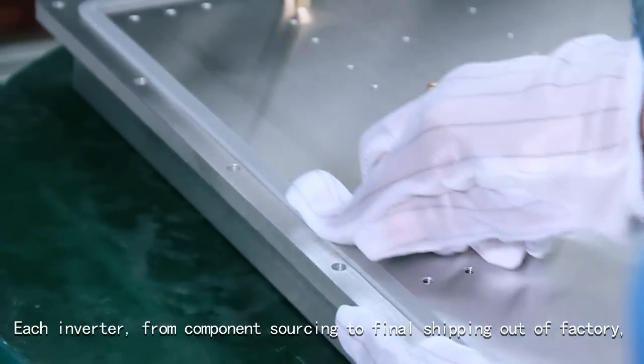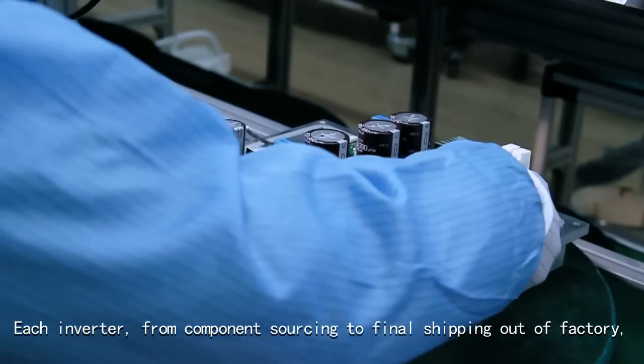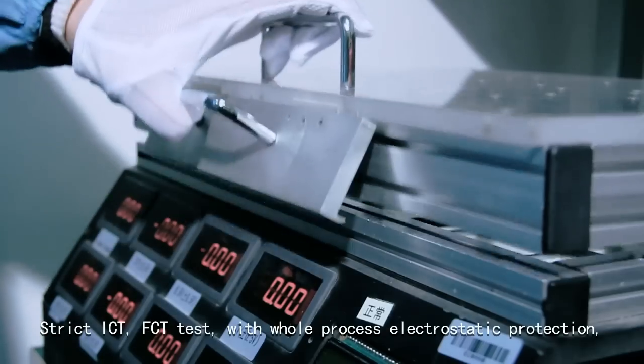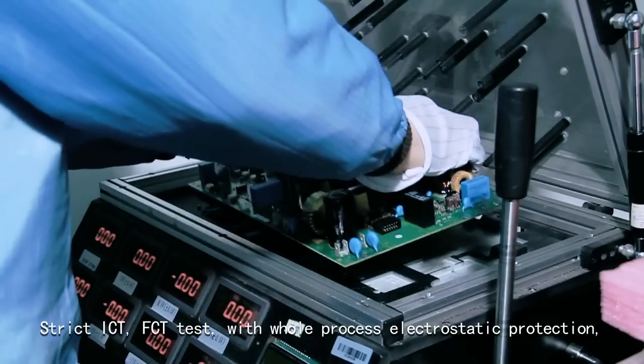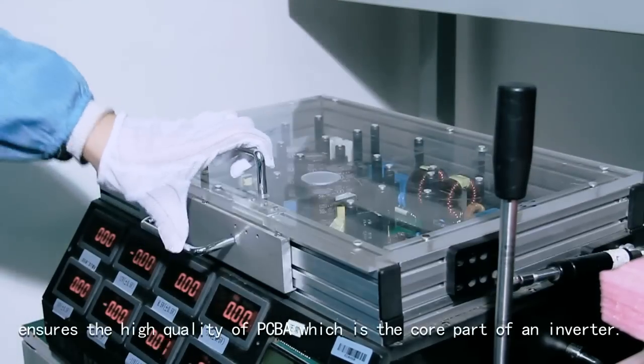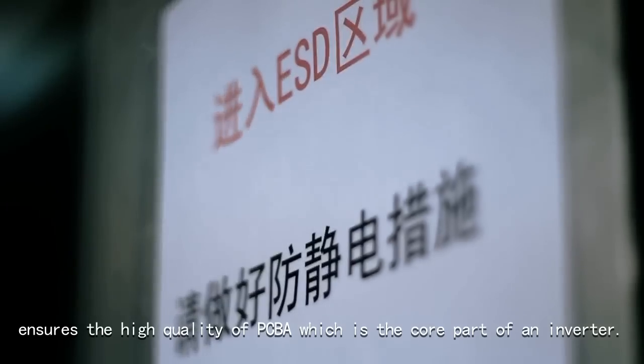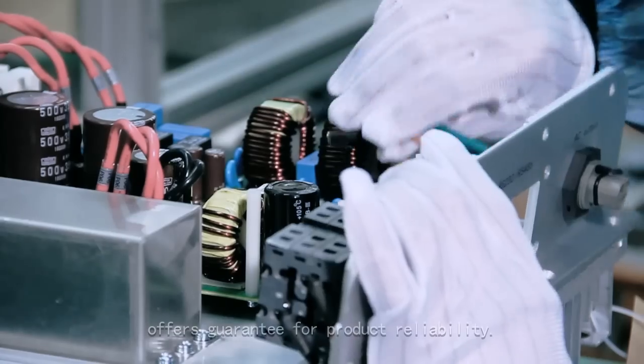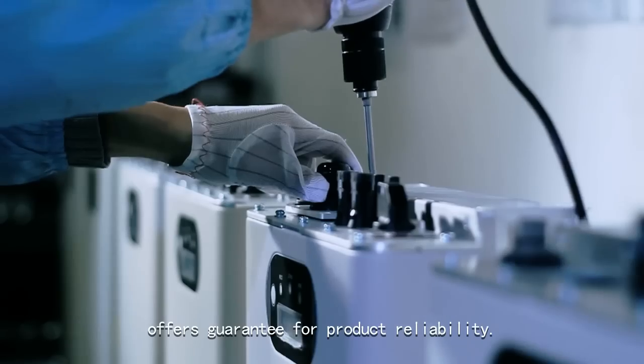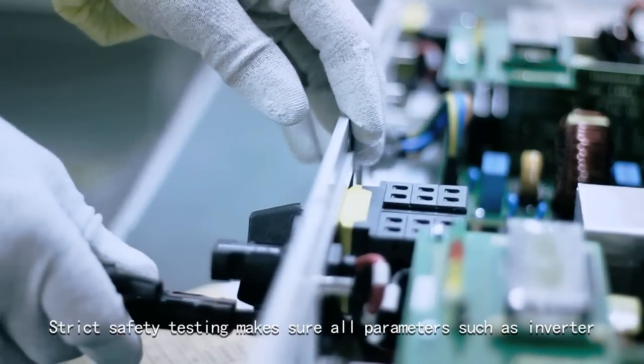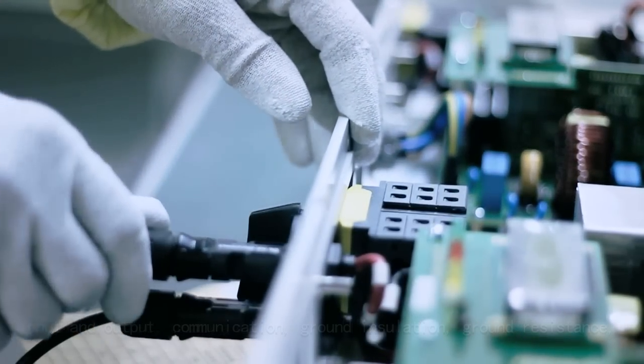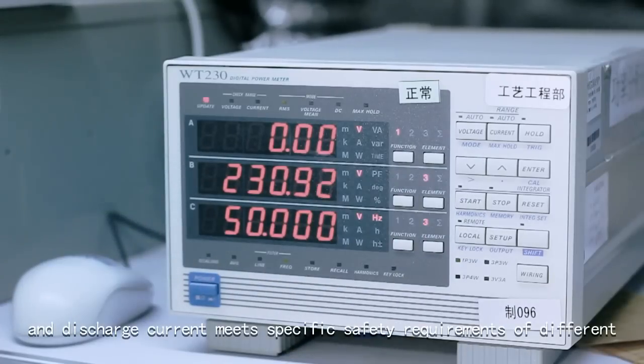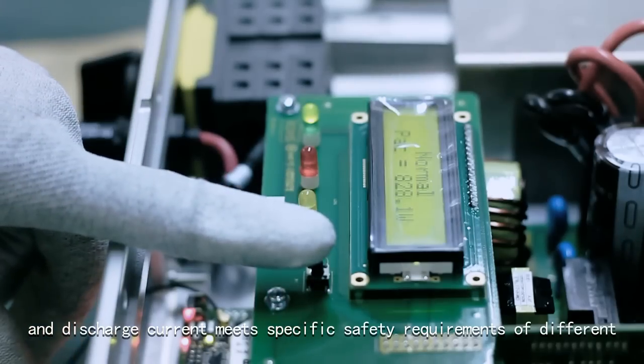Each inverter, from component sourcing to final shipping, has experienced rigid quality system management and control. Strict ICT and FCT tests with whole-process electrostatic protection ensure the high quality of PCBA, which is the core part of an inverter. Professional and rigid assembly process offers guarantee for product reliability. Strict safety testing ensures all parameters such as inverter input and output, communication, ground insulation, ground resistance, and discharge current meet specific safety requirements of different countries and ensure the safety of end users in emergencies.